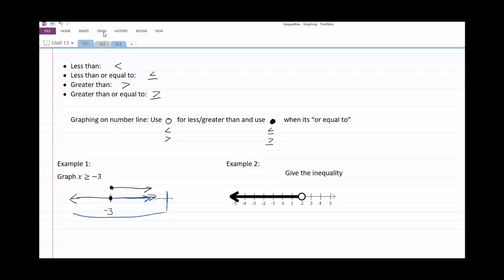On example two, we're supposed to give the inequality. Now we have an open dot at two, so that means we have a two, and it's going into infinity. Okay, so that means our x is going to be less than two.